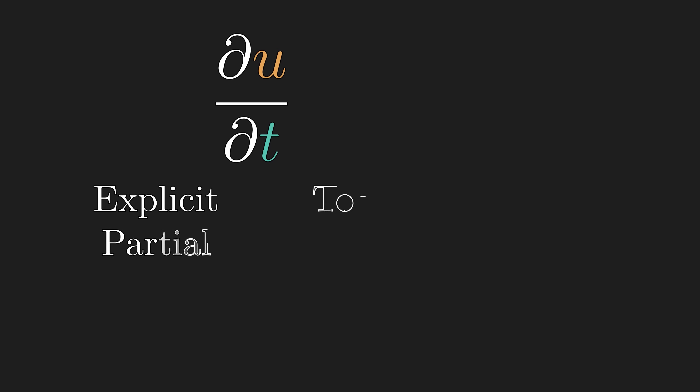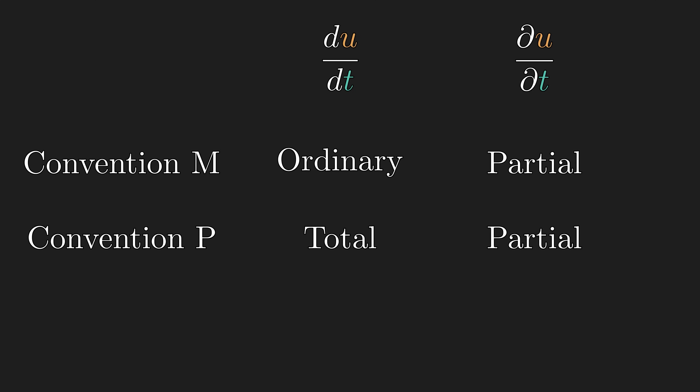In the previous video, I argued in favor of having different symbols for explicit partial derivative and the total partial derivative — and this is an example where that would be extremely useful. Using this alternative convention, we can avoid the 1 equals 3 contradiction due to improper abuse of notation. To summarize: we looked at two main conventions where 'partial derivative' could mean explicit derivative or derivative with chain rule, and in what context each convention is used in practice. Convention M is used primarily in mathematics, and convention P primarily in physics.